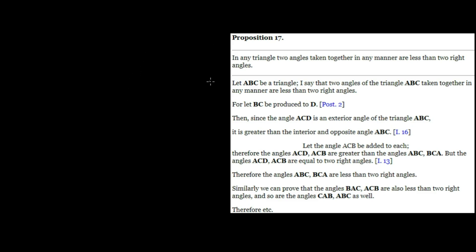In Proposition 17, we're going to prove that in any triangle, two angles taken together in any manner are less than two right angles.